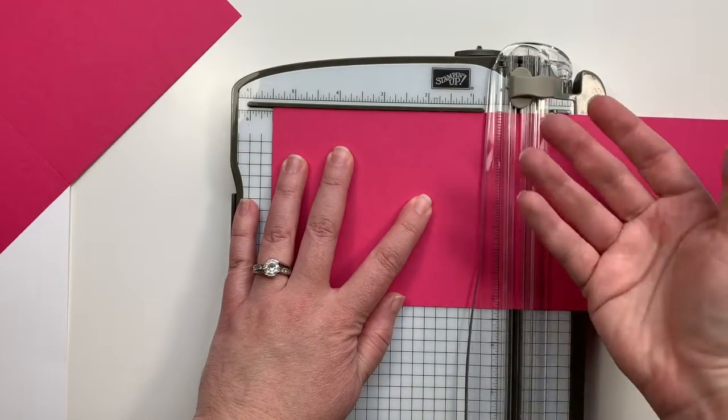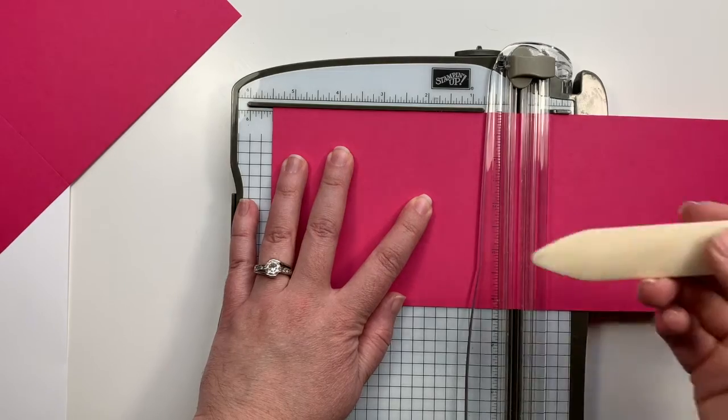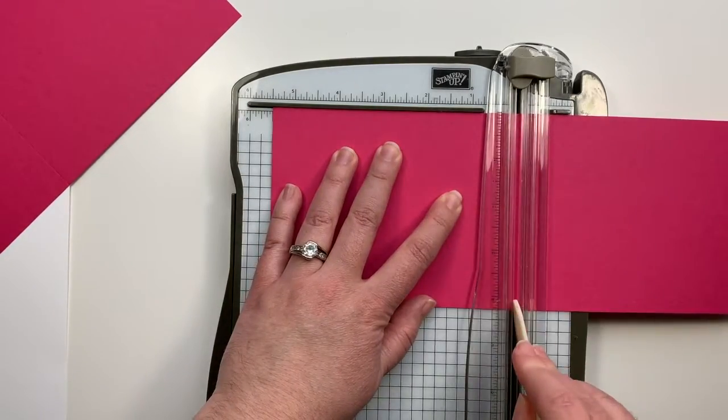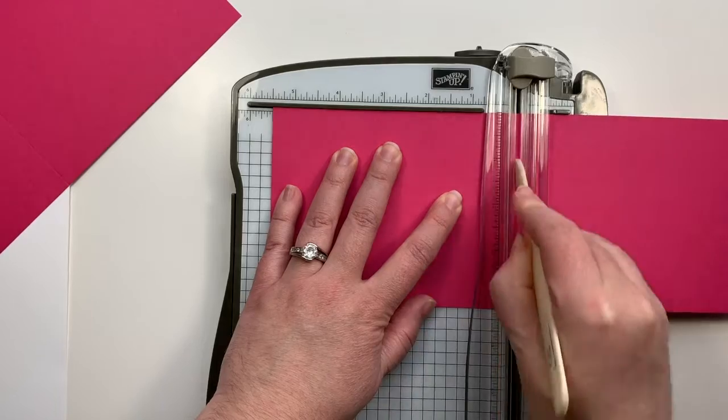You can use a bone folder. Just place it in the track of your trimmer and you can score it that way.